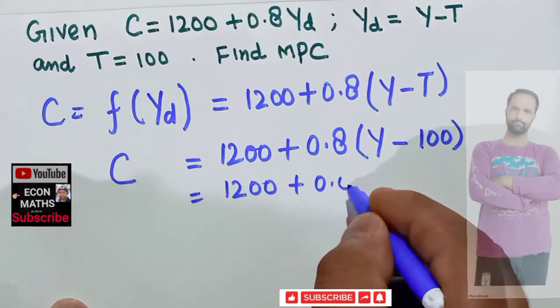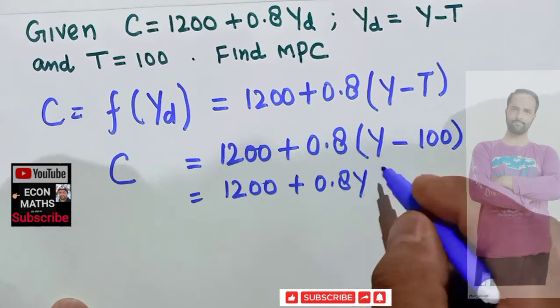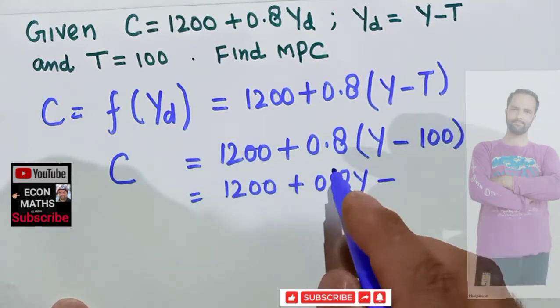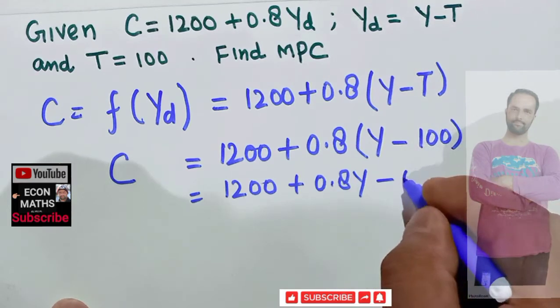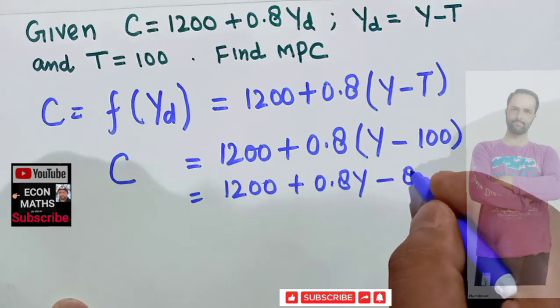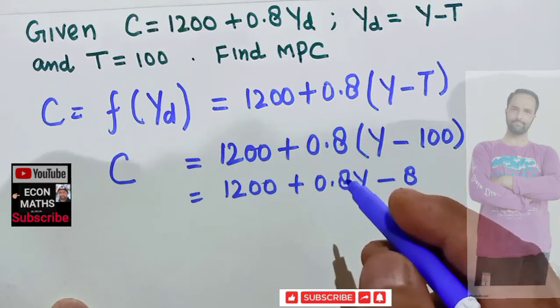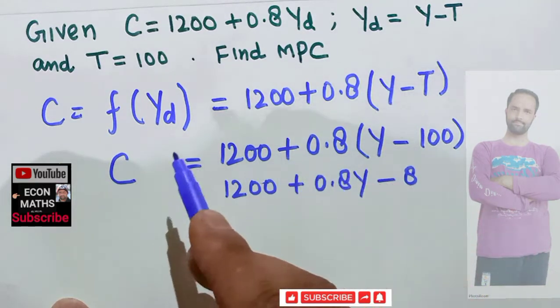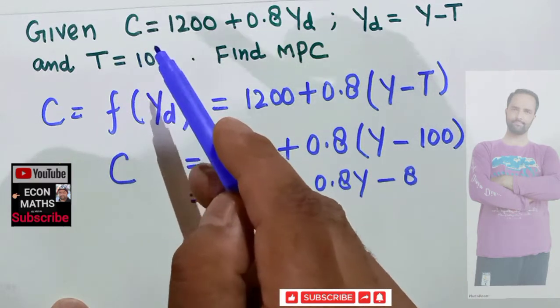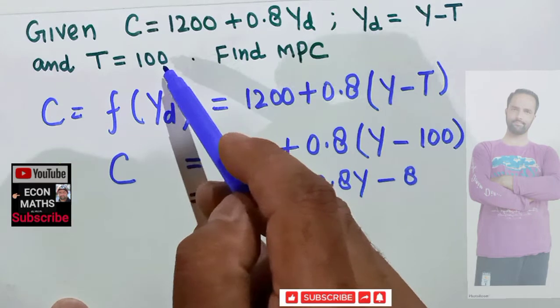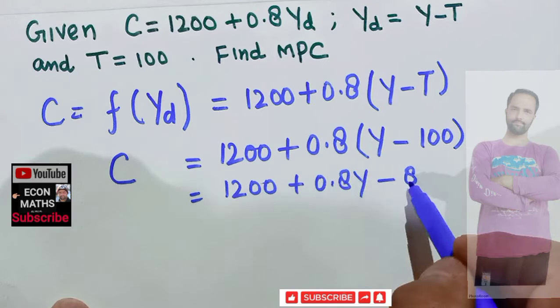And then we have minus 0.8 into 100, which comes out to be 80. So we have 1200, the tax rate is this, so 0.8Y minus 0.8 into 100 comes out to be 80.